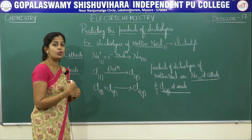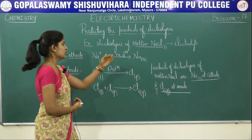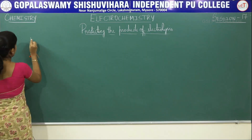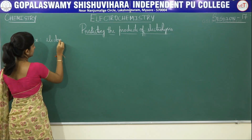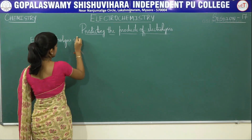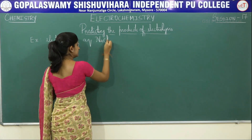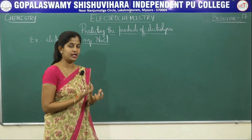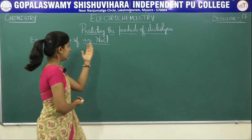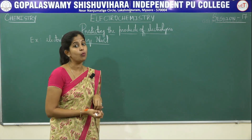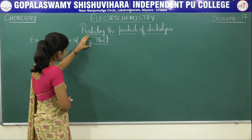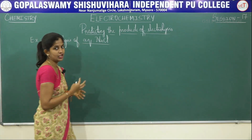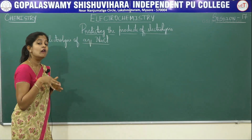Now we are taking an example wherein the electrolyte has more than two species, and you have to predict what are the products. We will see now. I am taking the example of electrolysis of aqueous sodium chloride. Molten NaCl is melted solid NaCl in liquid form, whereas aqueous sodium chloride is solid sodium chloride dissolved in water. As a result, there are four species present in your electrolyte.